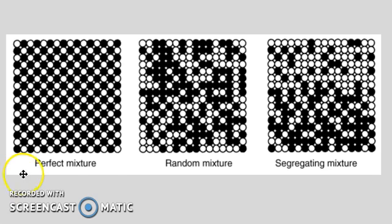There's a perfect mixture when at any point in the mixture it will have the same composition. Now this is ideal but can't really be obtained in the real world.